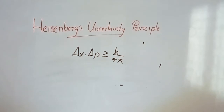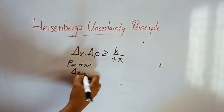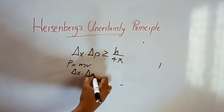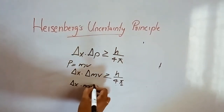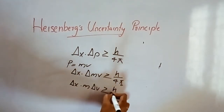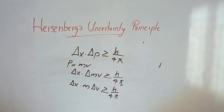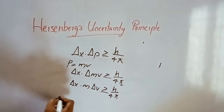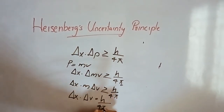We are going to modify the equation. Delta p can be written as m times Delta v, so the equation becomes: Delta x times m times Delta v is greater than or equal to h by 4 pi.